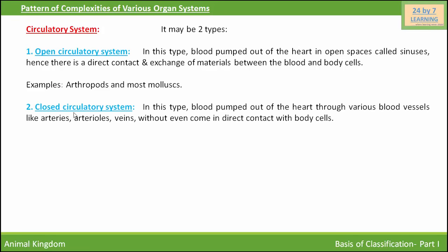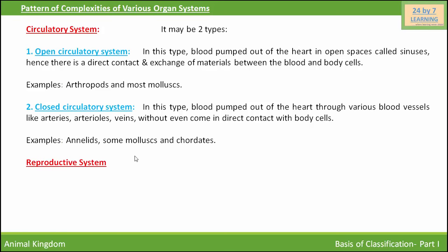In a closed type of circulatory system, blood is pumped out of the heart through various blood vessels like arteries, arterioles, capillaries, and veins without coming into direct contact with body cells. Examples include annelids, some molluscs, and chordates.